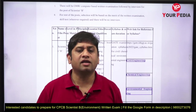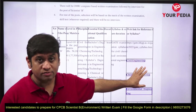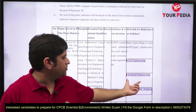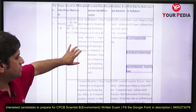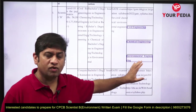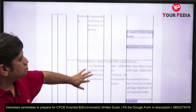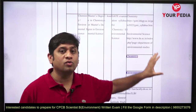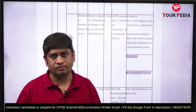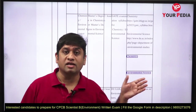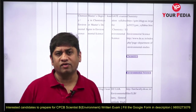My advice is: if you are from a civil engineering background, prepare using the GATE syllabus for civil engineering for this CPCB paper. Similarly, if you are a chemical engineer, prepare with the chemical engineering GATE syllabus. There are also two environmental domains available — environmental engineering and environmental science. The environmental science syllabus follows the Delhi University curriculum. For those writing with environmental engineering or environmental science, a complete prepared module is available on your Pedia.